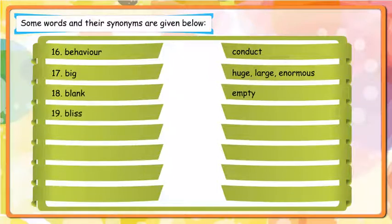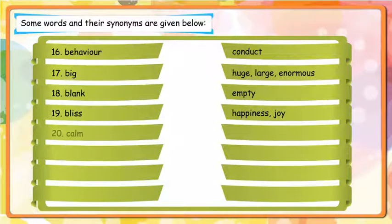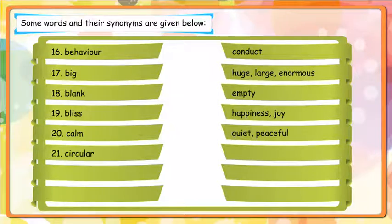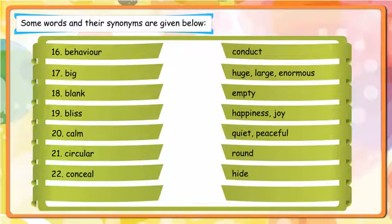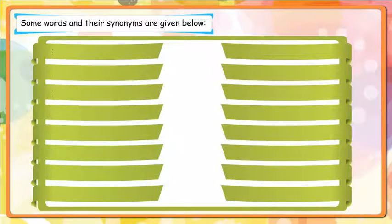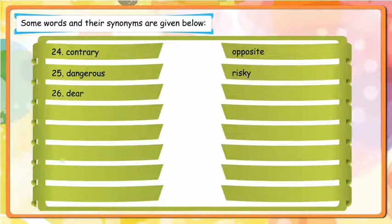Bless - Happiness, Joy; Calm - Quiet, Peaceful; Circular - Round; Conceal - Hide; Contempt - Scorn; Contrary - Opposite; Dangerous - Risky; Dear - Costly, Expensive.